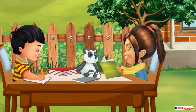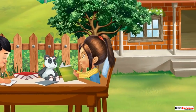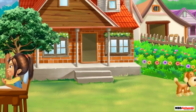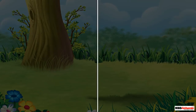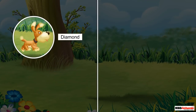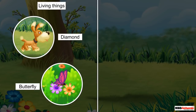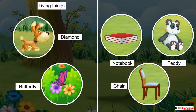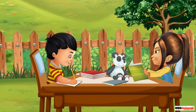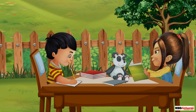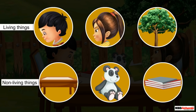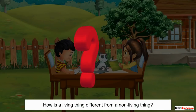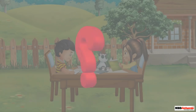We can see that Sid and Alicia are surrounded by many things. Some of these are living, while others are non-living. For example, Diamond and the butterfly are living things. But the notebook, the teddy, and the chair are non-living things. Just like Sid and Alicia, we all are surrounded by living and non-living things.